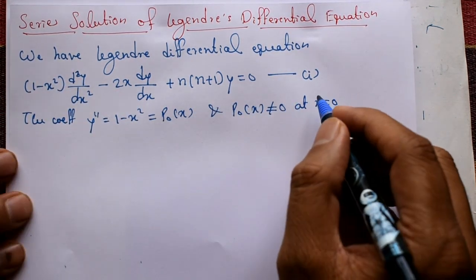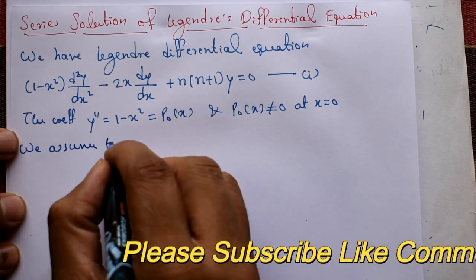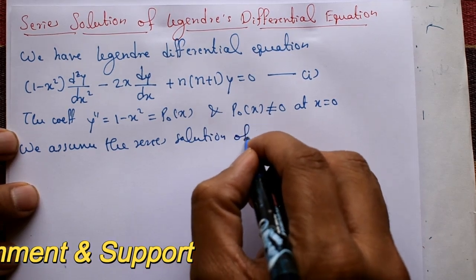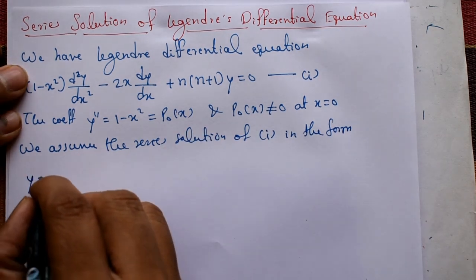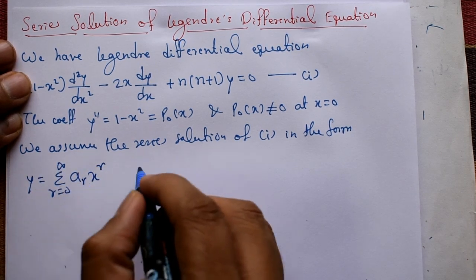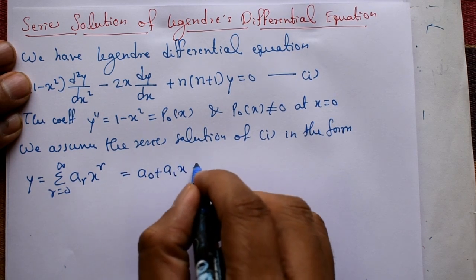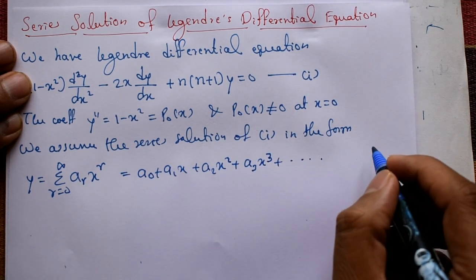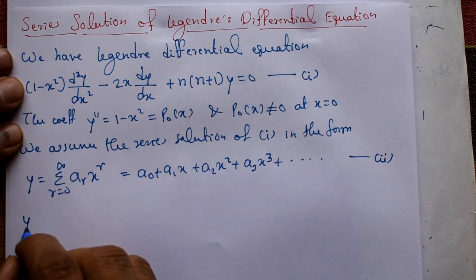We assume the series solution of equation number 1 in the form y = Σ(r=0 to ∞) aᵣxʳ. Expanding this gives y = a₀ + a₁x + a₂x² + a₃x³ + ... and so on. This is equation number 2.